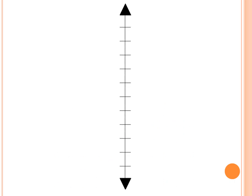We also have a vertical number line. The same with the horizontal number line, zero is located at the middle part. The numbers below zero are negative numbers, and the numbers above zero are all positive numbers.